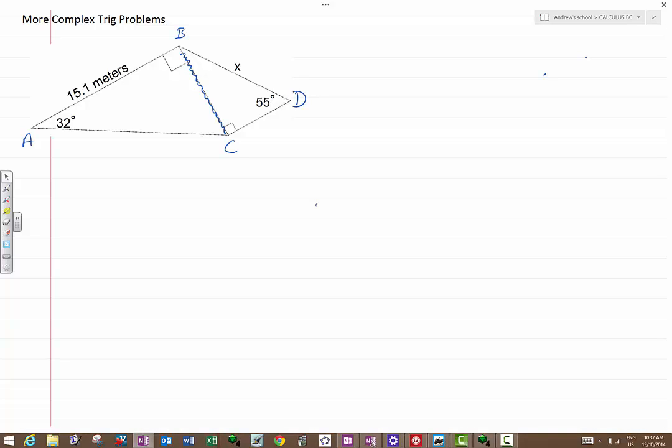So in triangle ABC, relative to the 32 degrees, we see that the 15.1 is the adjacent and the side BC is the opposite. So we can use tan to figure out what the length BC is. Tan of 32 degrees is opposite over adjacent, which is our side BC divided by 15.1.